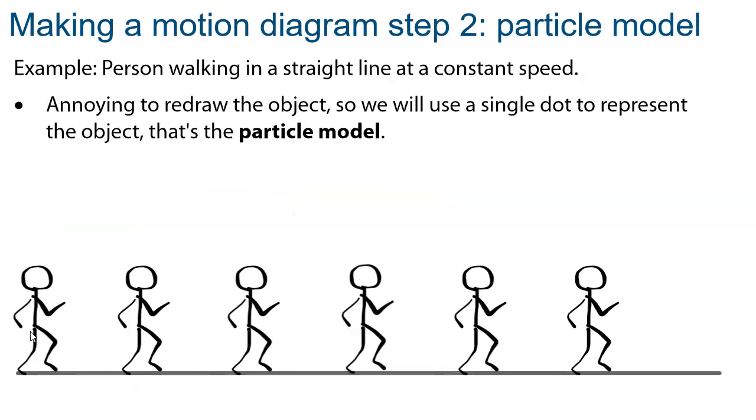So we now have our basic motion diagram. In practice, however, when you draw them without the help of the computer, you would have to redraw the object each step of the way, and this can become really annoying. So instead, we'll just use a single dot to represent the object. The physics will be working and we can use forces on that single dot if we put the dot at a place that is called the center of mass.